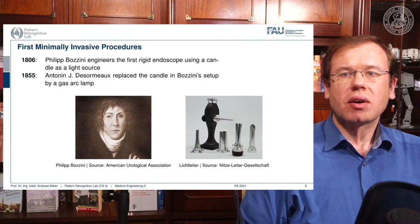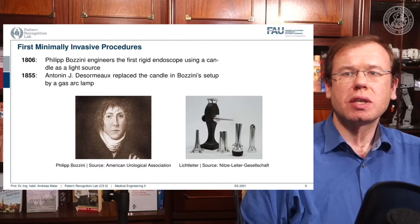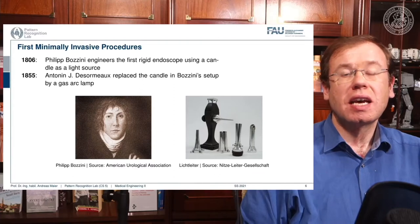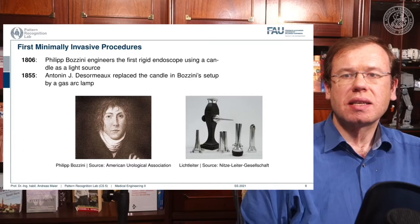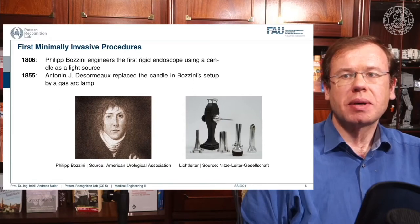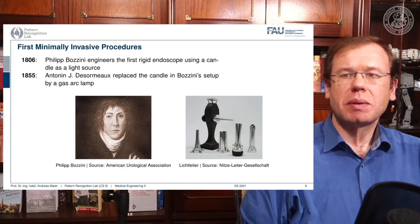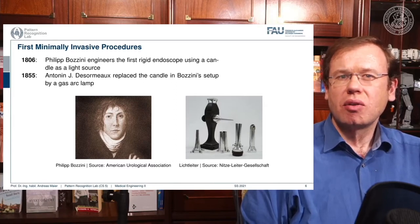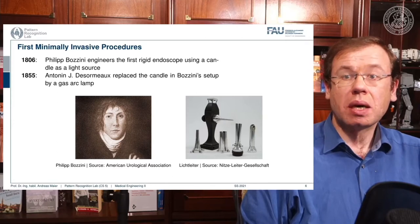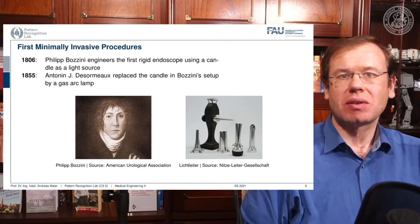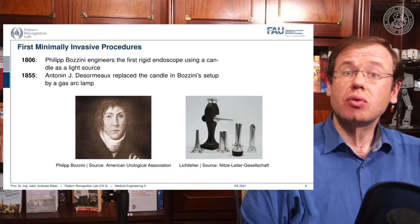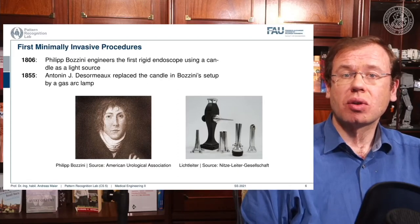The first endoscopes were produced by Philip Puzzini, who engineered a first rigid endoscope using a candle as a light source as early as 1806. In 1855, Antonin Descormaux replaced the candle in Puzzini's setup with a gas arc lamp. This is the kind of setup people were using — you can't look very far like modern endoscopes, but you are able to look inside the body. The key challenge is how to get light into the body so you can actually see something, requiring a rather powerful light source.